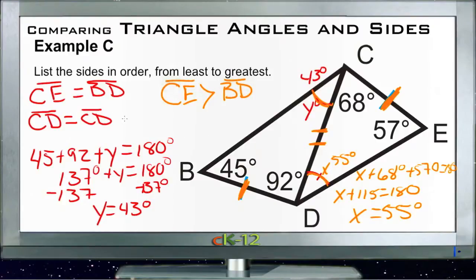So now we have our order. We have our CE and BD are the smallest, and then CD obviously goes in the middle, and then CE is greater than BD, so BD would be our third length and CE would be our fourth length, our longest length.